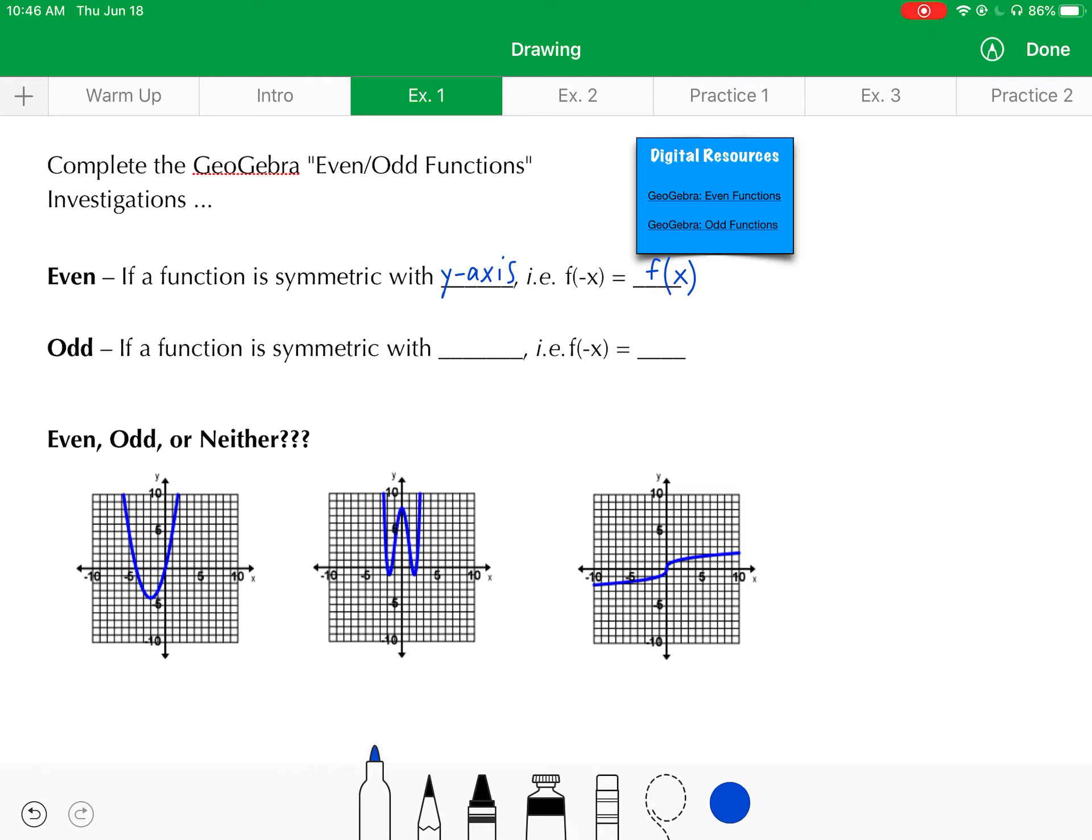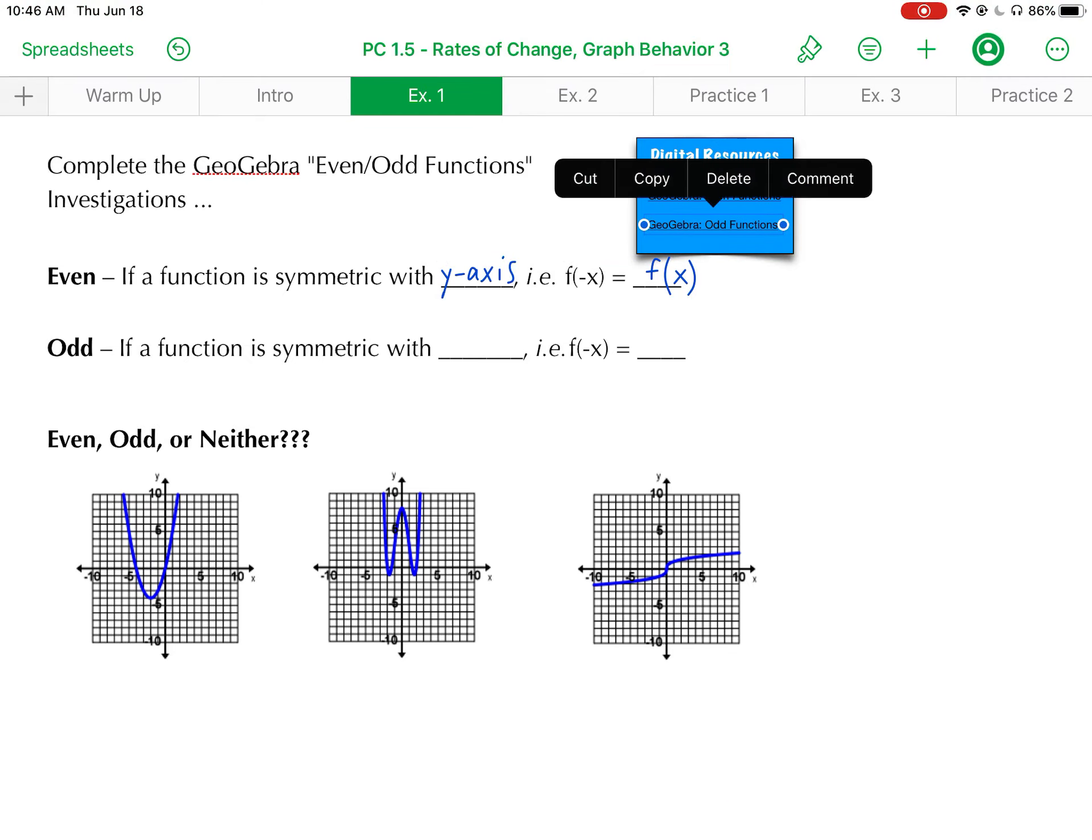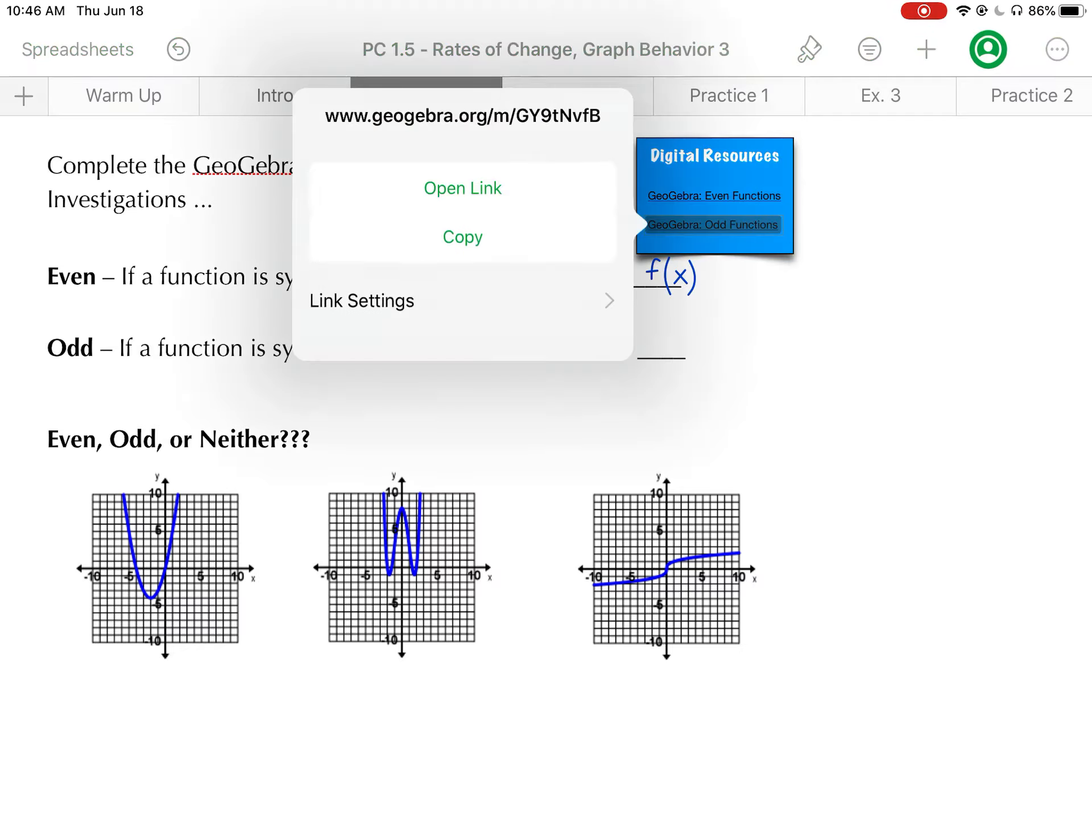Now let's look at an odd function. Click the second link there. Now you've got to get out of your writing tool first. Hit done. Open that link up. And this applet behaves much the same way.